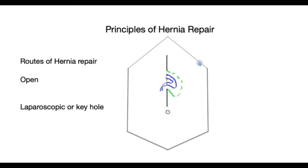Let's assume this is the belly — this is the belly button, and there's a hernia over here that has come through a previous incision, with a loop of bowel poking out. In the open approach, the surgeon will make an incision directly in this area.